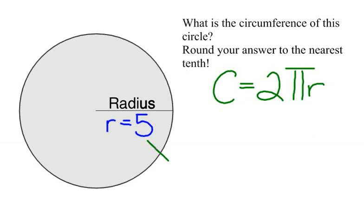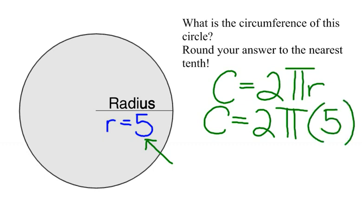If you are given your radius, in this case it's 5, all you need to do is substitute 5 into your formula. C will be equal to 2 pi times r and your r here is 5.